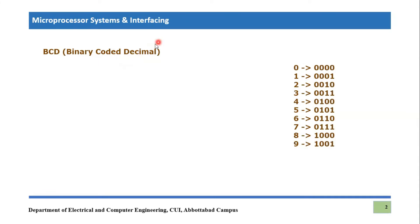Using four bits, zero is represented as 0000, one as 0001, and for example six would be represented as 0110. This is how you code a decimal number in BCD using only four bits.